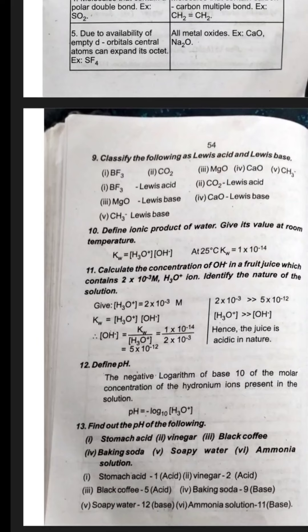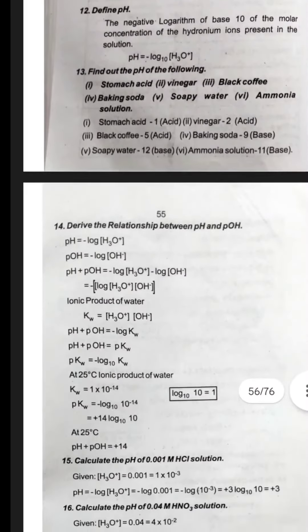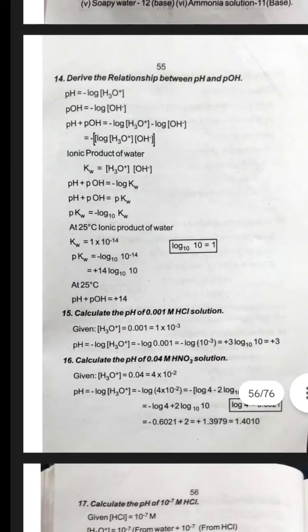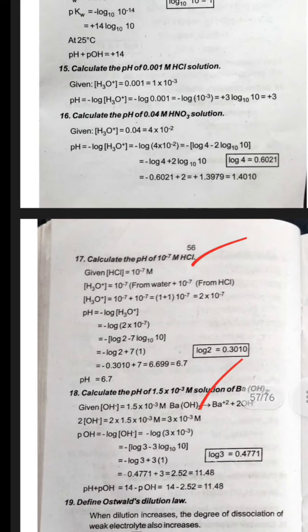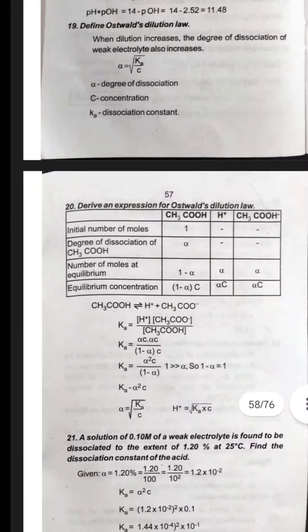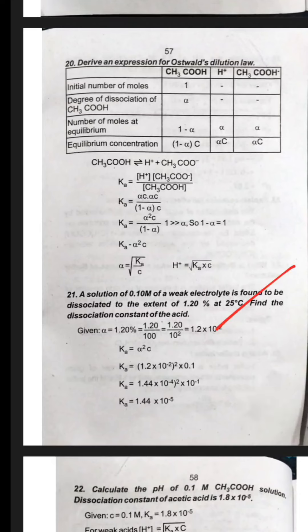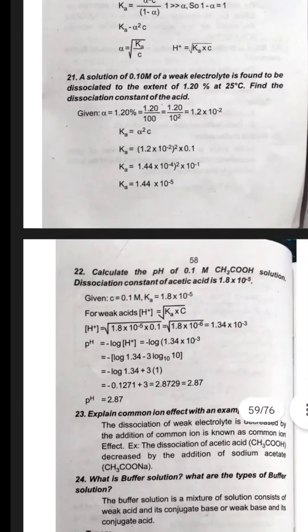The ionic product sum, pH sum. pH sum is equal to 4 sum. 4 sum is equal to 4 sum. Okay. Also dilution sum. pH sum is equal to 4 sum.